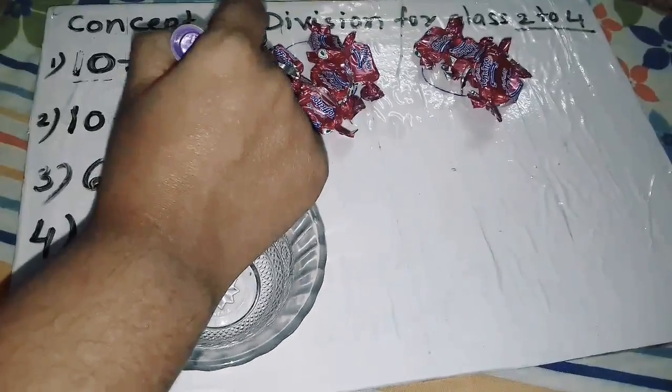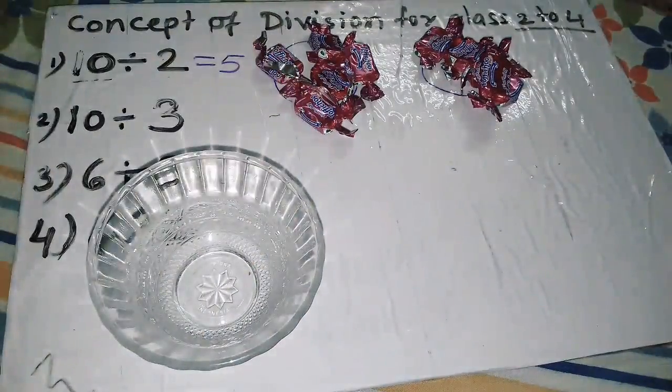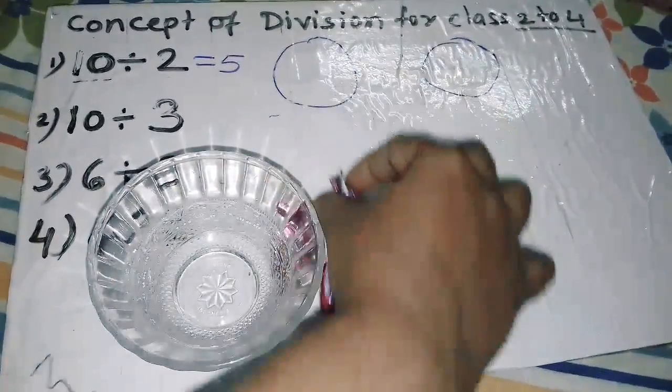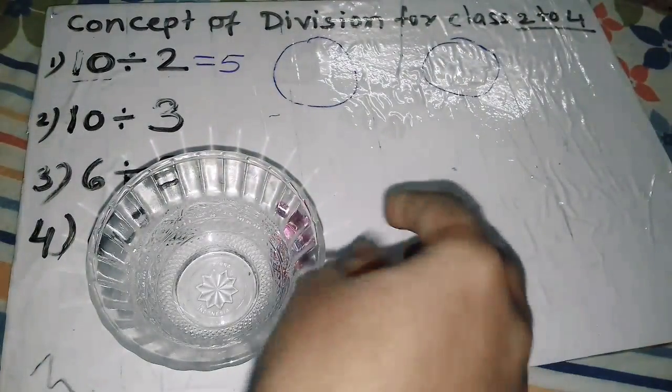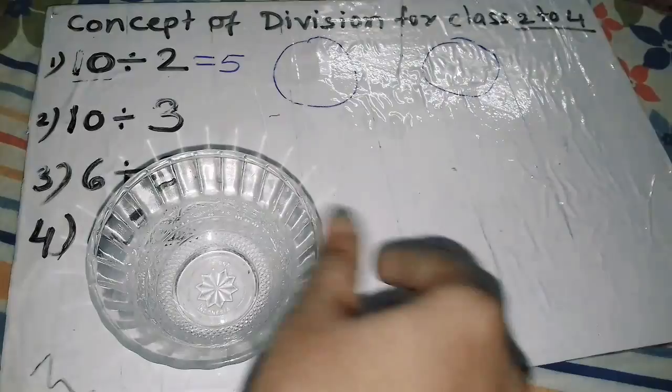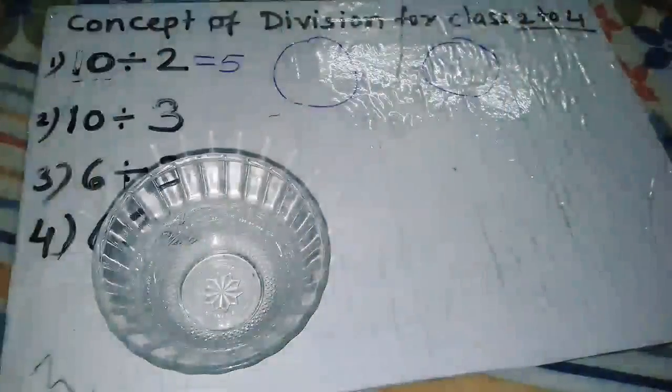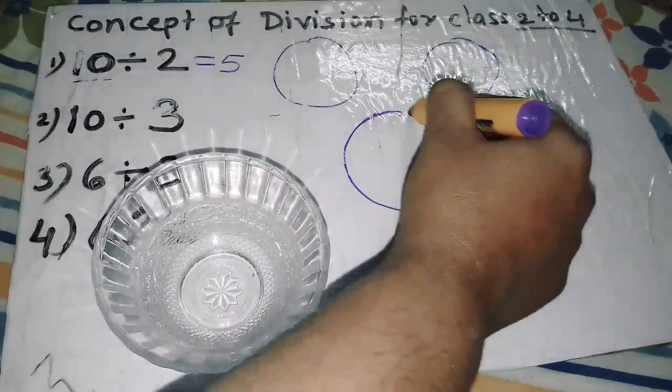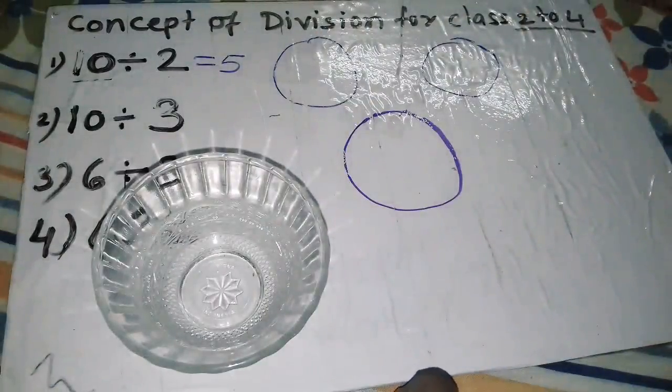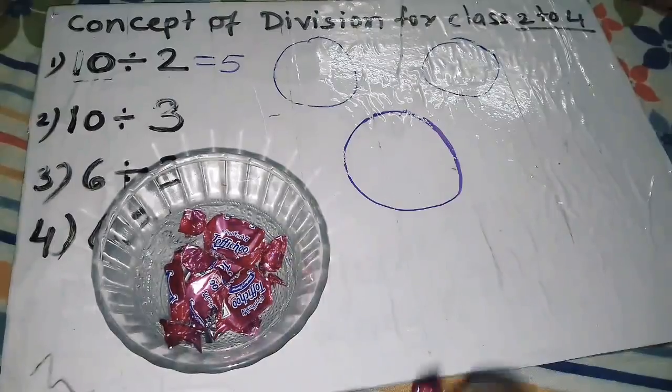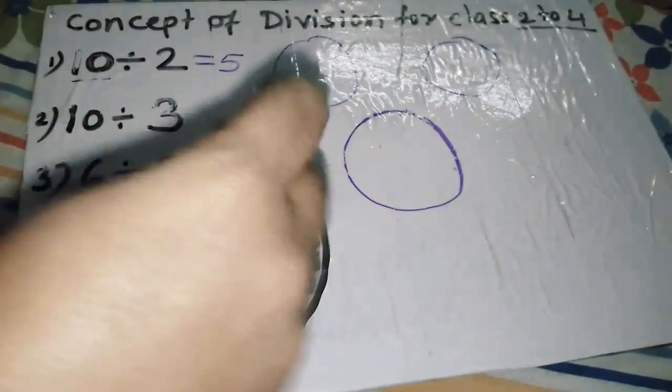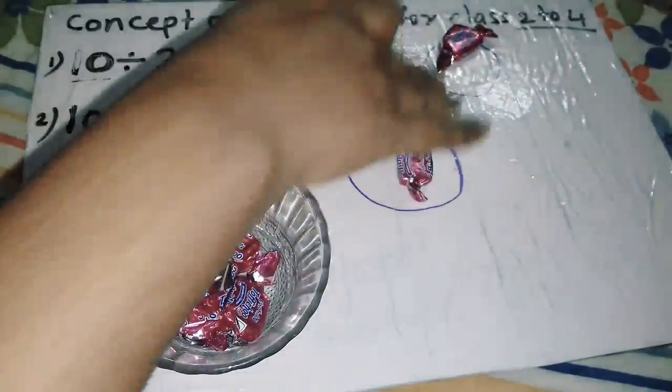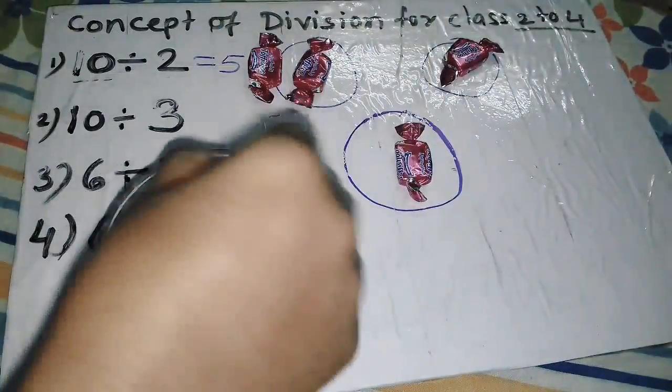Now another friend joined them. Now I have to distribute among three friends. I will add one more friend and distribute the same 10 chocolates among three friends. I will start one by one keeping one in each: 1, 2, then 3.